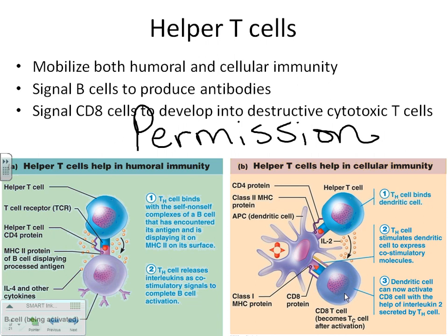TH also gives permission to a TC cell. Here's the TH cell interacting with a phagocyte — the phagocyte ate the bacteria, showed it to the TH, and the TH sees 'yep, you found something bad.' It immediately secretes a chemical that tells the TC to go to work. What does a cytotoxic T cell do? Cyto means cell, toxic means destroy — a cytotoxic T cell can walk right up to an entire cell and kill it.